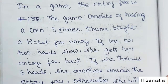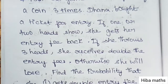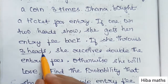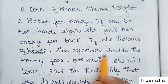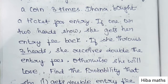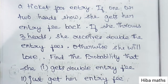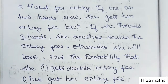So, one head gives 150. If she throws three heads, she receives double the entry — that comes to 300. Otherwise, she will lose. The outcomes include 0 heads, 1 head, 2 heads, or 3 heads from the coin tosses.